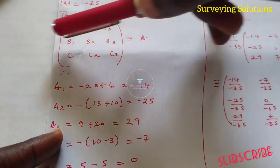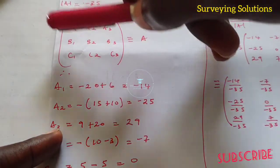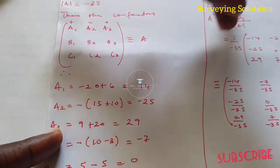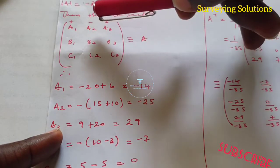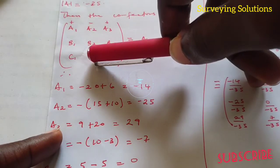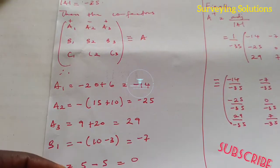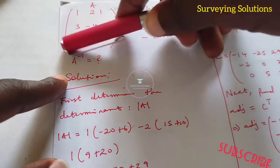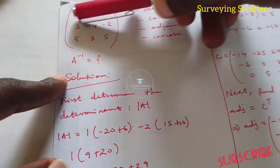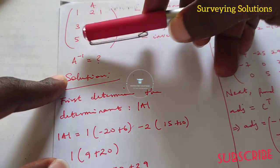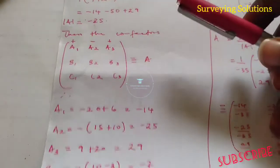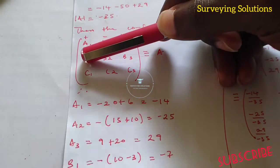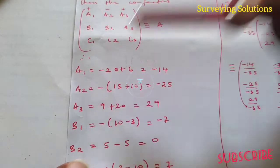Now we come to the second row, b1 to b3. For b1, we do not consider this first column and this second row. We are considering a2, c3 and a3, c2 — which means we're only seeing 2 and 5, giving 10, then 1 times 3 which is 3. So we have 10 minus 3. Remember the sign here is minus, because the alternating pattern gives a minus at this position — so we have minus here.